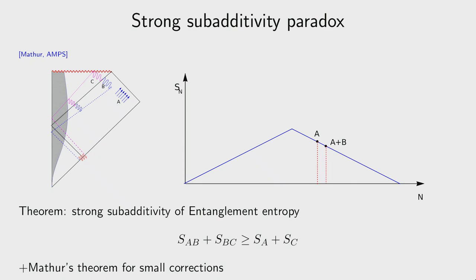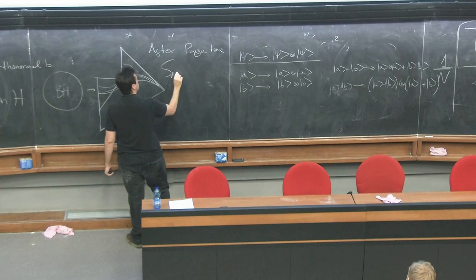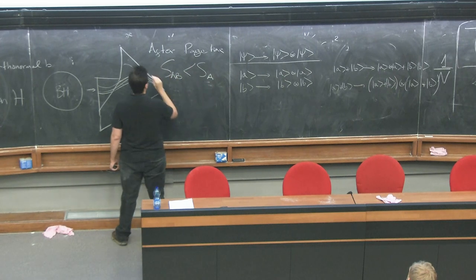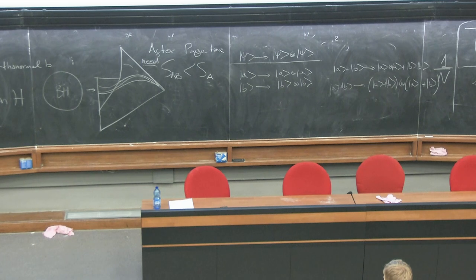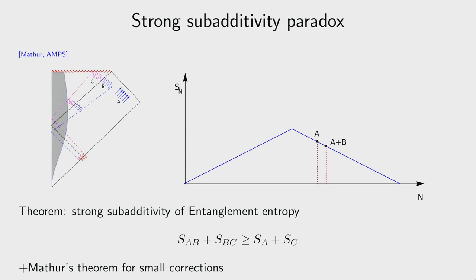If S(AB) > S(A), the entanglement entropy of the radiation would keep increasing forever — like in Hawking's computation. This contradicts what we need for unitary evaporation, where the curve must turn down after the Page time. Mathur examined what happens if you relax the maximal entanglement between B and C by introducing small corrections, and showed that even small corrections cannot resolve this paradox.